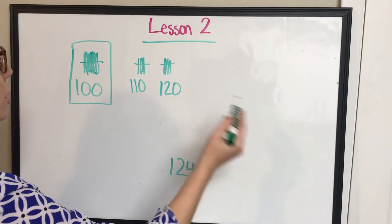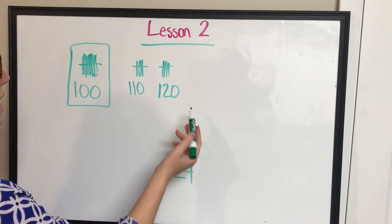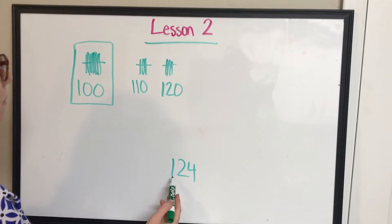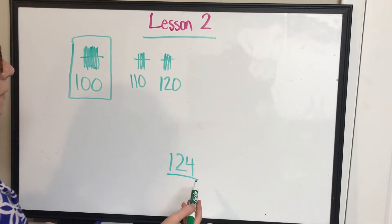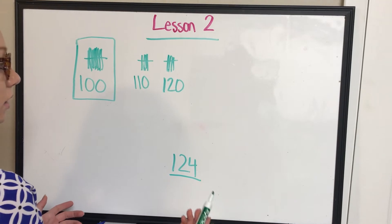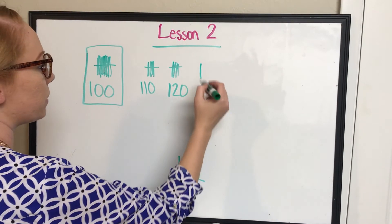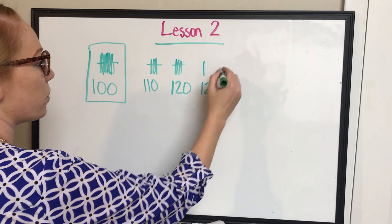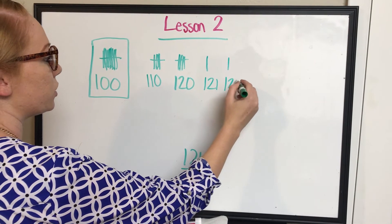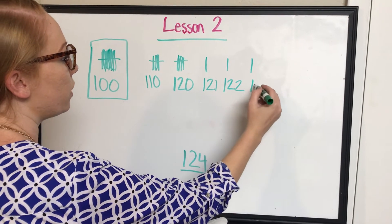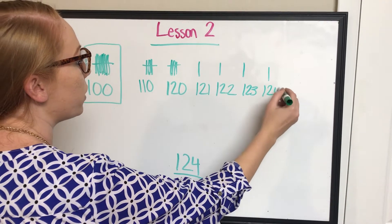Can I add another tens block? No, because 120 plus 10 gives me 130. And I'm only trying to get to 124. Can I add a ones? Can I add a ones, though? Yeah, I could add a ones. And sum it out of ones would be 121. Add another one, 122. Another one, 123. Another one, 124.